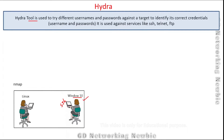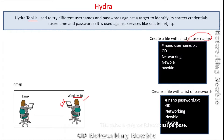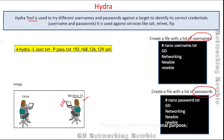Once I've found that Secure Shell service is running there, I can try to log in using SSH, but I need a username and password. I can create a list of usernames and passwords, try all those combinations against this machine to find the right credentials, and then log in. I'll create a file with a list of usernames and also a file with a list of passwords, then use the Hydra tool.